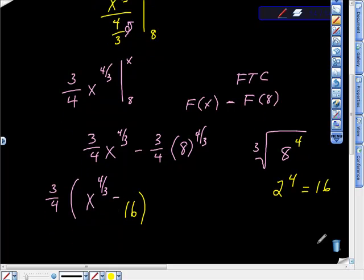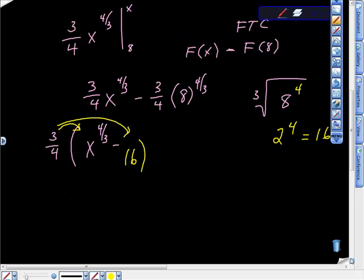Hopefully you're noticing that that 3/4 is still on the outside, so I'm going to factor that back in. And as I do that, what I'm going to get is 3/4 x to the four-thirds minus 12. And if you see how I did that, 3/4 of 16 is 12, right?